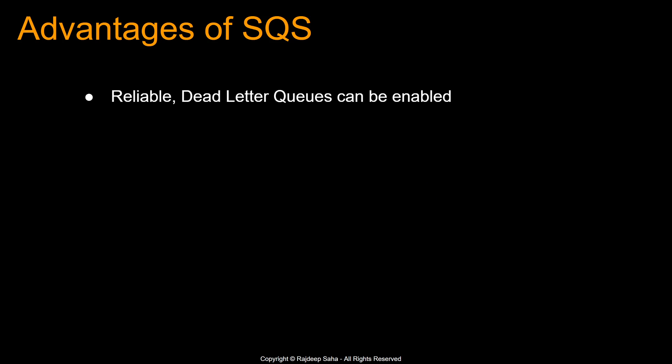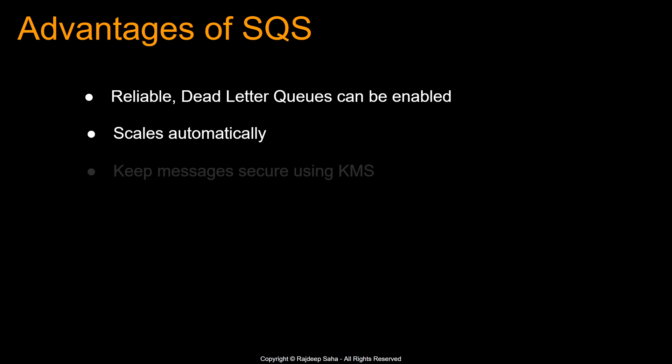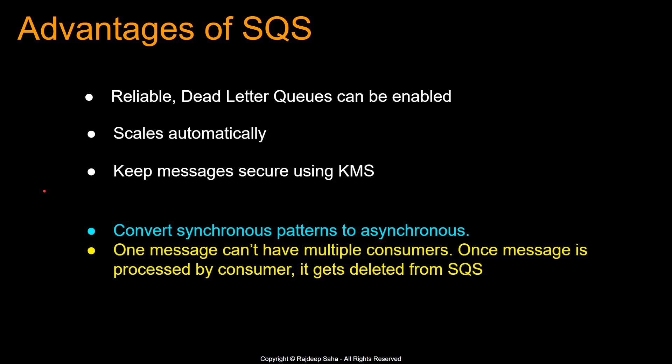What are some of the advantages of SQS? SQS is reliable — even after a certain number of delivery failures, it can go to a dead letter queue and you can retrieve messages from there. This is one difference from SNS: with SNS, after a number of retries, messages can get discarded. With SQS, you can use a dead letter queue for messages to be retrieved. SQS also scales automatically, and keeps messages secure using Amazon KMS. One big advantage of SQS is it can convert synchronous design patterns to asynchronous. Another key difference from SNS: in SQS, one message cannot have multiple consumers. Once a message is processed by one consumer, it gets deleted from SQS.